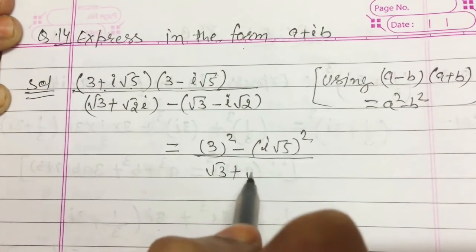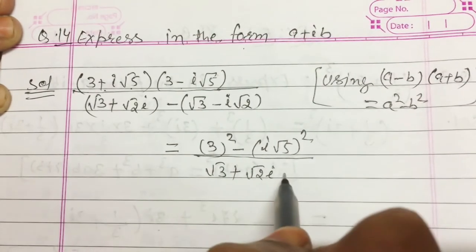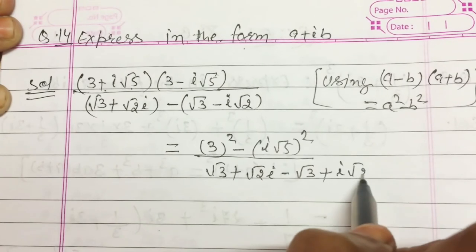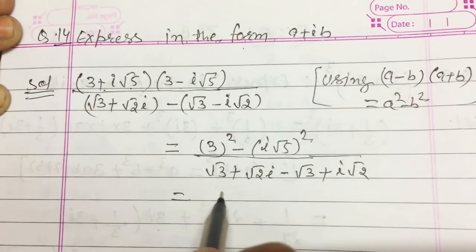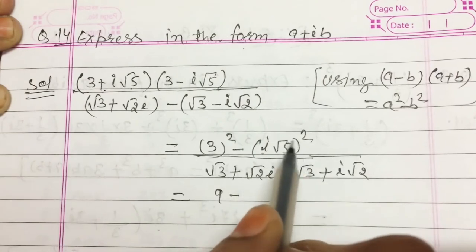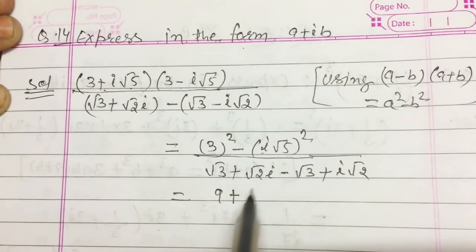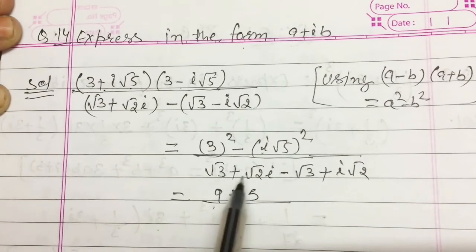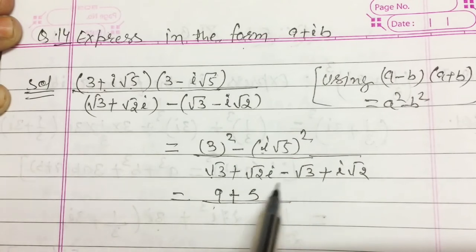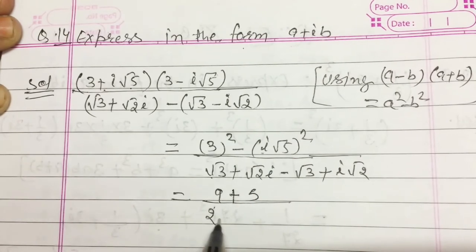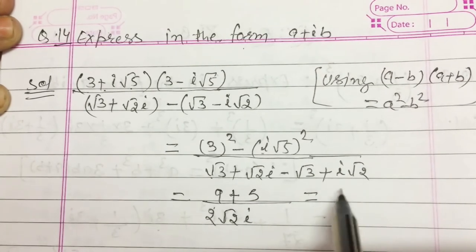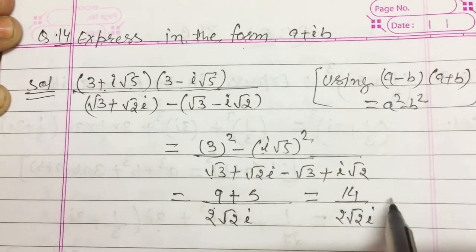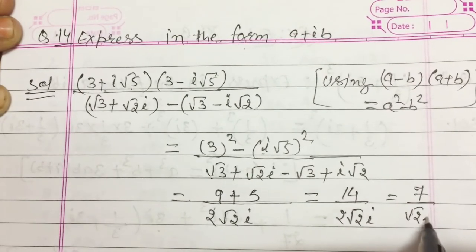In the denominator it is (√3 + √2 i)(√3 − √2 i). Simplifying the numerator: 9, and i² becomes −1 so minus minus gives plus 5, giving 14. In the denominator, √3 and −√3 cancel, leaving only 2√2 i. So we get 14/(2√2 i) = 7/(√2 i).